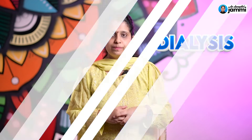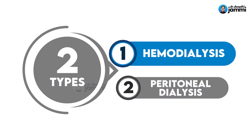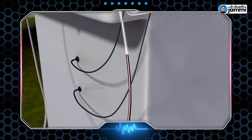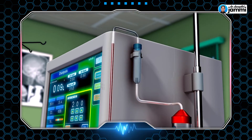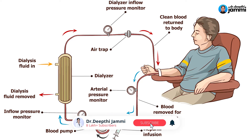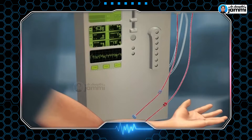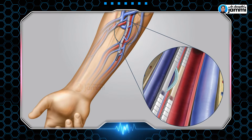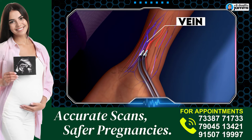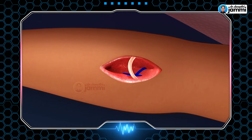The first type is hemodialysis — 'hemo' meaning blood. In hemodialysis, blood is taken from the body into a machine, filtered, and returned. To connect the patient to the dialysis machine, a minor surgery is performed to create a vascular access or vascular channel. This is done by connecting a vein and an artery — if connected using a graft it is called a graft, and if connected directly it is called a fistula. We usually create a fistula.